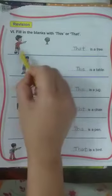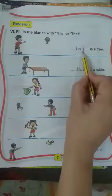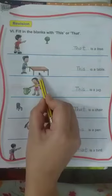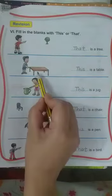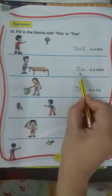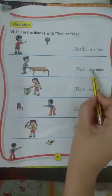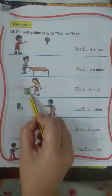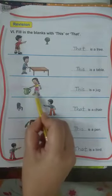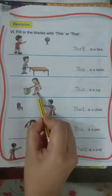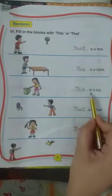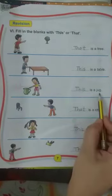So in this picture, this tree is far from this boy, so we use: 'That is a tree.' In the next picture, this table is very near, so: 'This is a table.' In this picture you can see this jug is very near to this girl, so we use: 'This is a jug.'